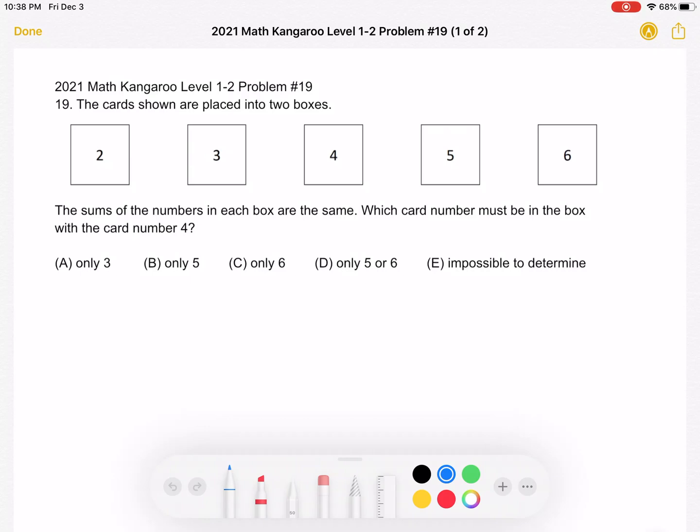A, only 3, B, only 5, C, only 6, D, only 5 or 6, or E, it's impossible to determine. This is the problem as it originally appeared on the test.